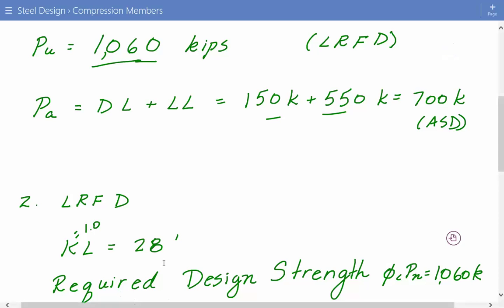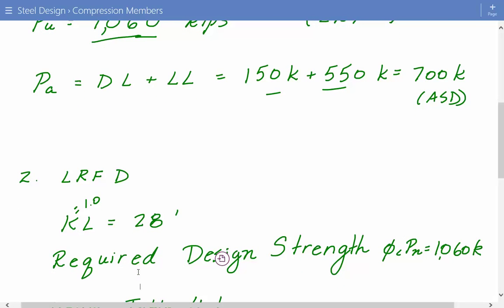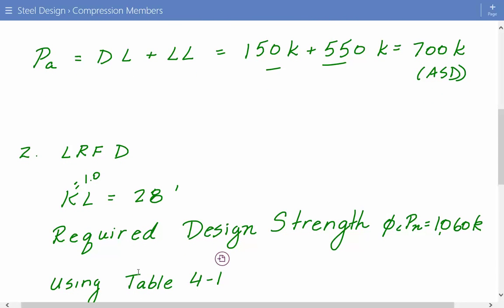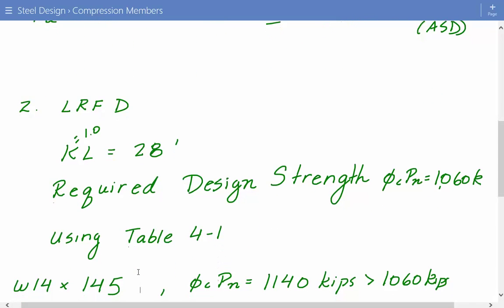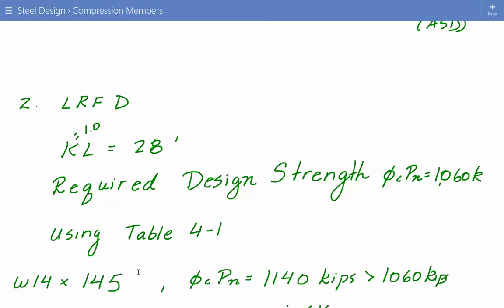We'll use the column load tables in chapter 4 of the manual. Using table 4-1, which is based on A992 steel with 50 ksi yield strength, which matches our problem specification. We don't have to adjust for that. We take our KL value, go on the left side of the table, find 28 feet, and move over until we get the closest value above 1,060 kips.